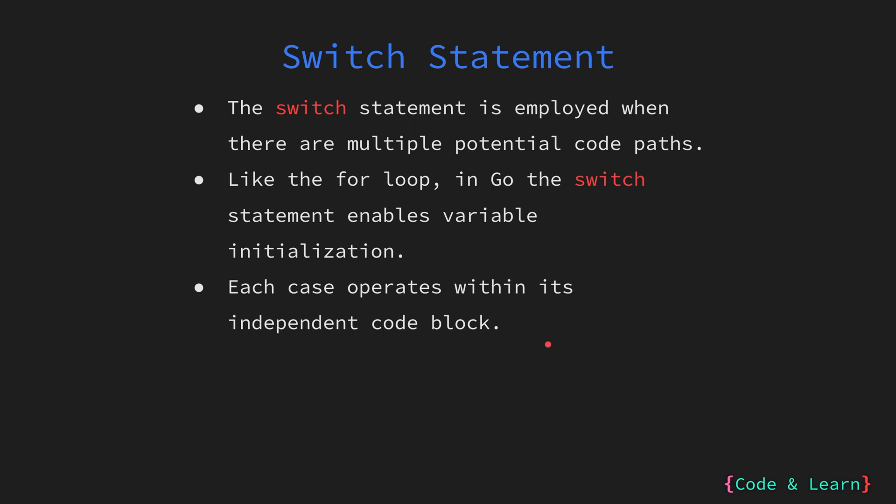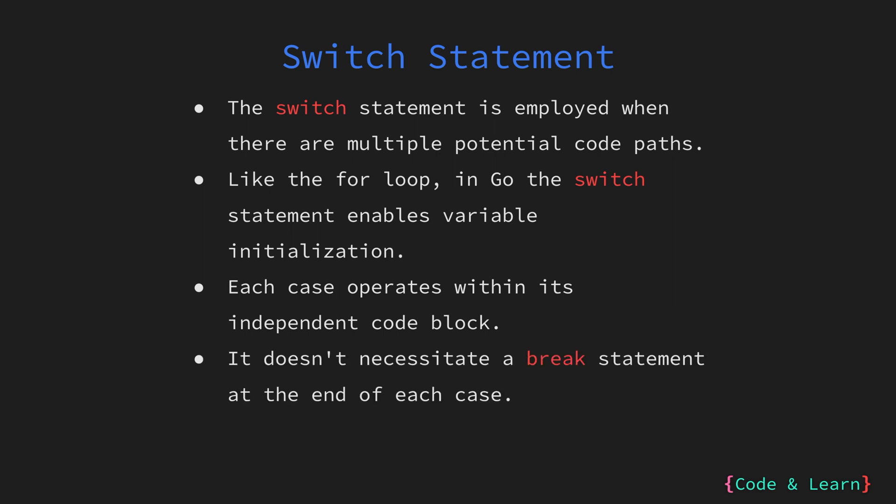For example, if you declare a variable in the case code block, it won't be accessible outside the case code block. In Go, you don't need to include a break statement at the end of each case. Unlike some other languages, once a case is executed, the control flow automatically exits the switch block. This helps to simplify the code and reduces the likelihood of forgetting a break statement.